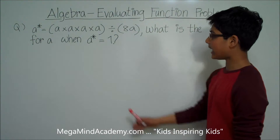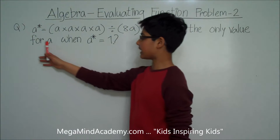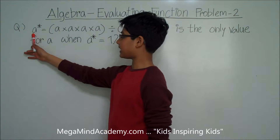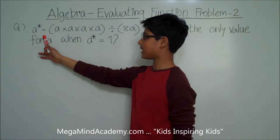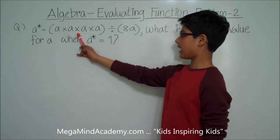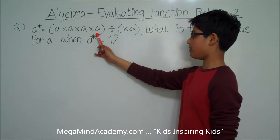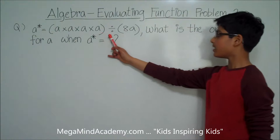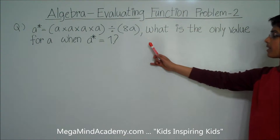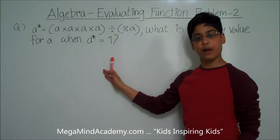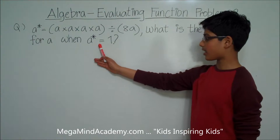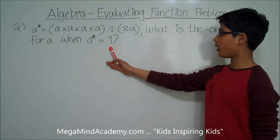This problem states that a asterisk is equal to a times a times a times a divided by 8a. It also states that a asterisk is equal to 1.